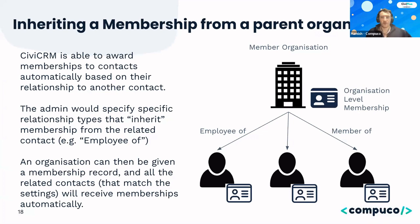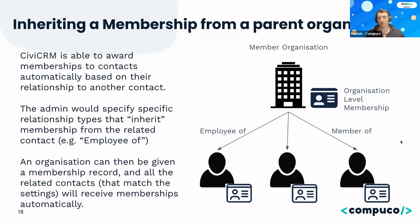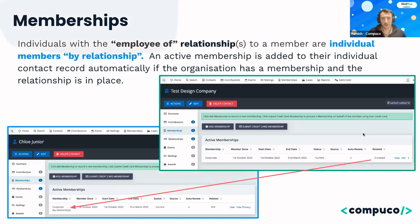A really useful concept is the ability to link memberships between organizations and people. Many clients have memberships where an organization is the member and people who work for that organization want to inherit that membership. CiviCRM allows this using its relationships functionality — individual contacts can inherit a membership if they have the right kind of relationship to the organization. So a member organization and anyone connected to it automatically inherits that membership.